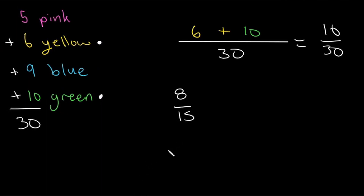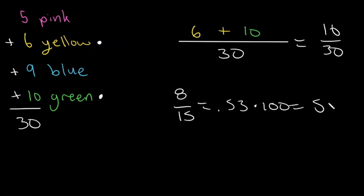And we can actually write this as a percentage if we want. So if we put 8 divided by 15 in our calculator, that is going to be 0.53, and we can multiply that by 100. So there is a 53% chance of getting a yellow or green marble.